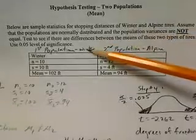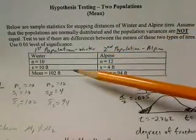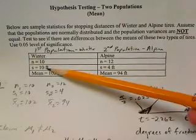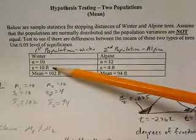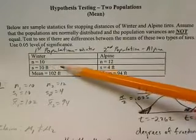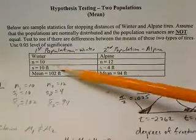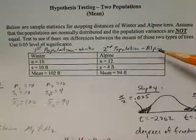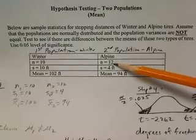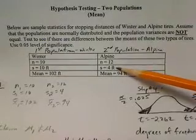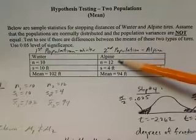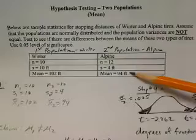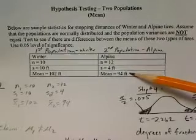We'll assume that the first population is those winter tires. We see a sample size of 10. The standard deviation of the sample of those 10 tires is 10 feet. The mean of those 10 tires is 102 feet. In the second population, we'll call that the alpine tire. We see we have a sample of size 12. Standard deviation of those stopping distances for those 12 tires is 4 feet, and the mean of those 12 tires is 94 feet.